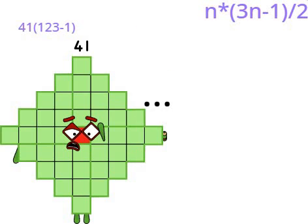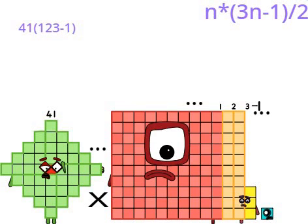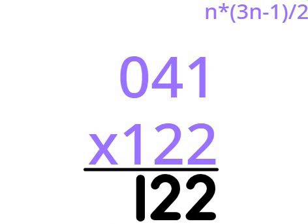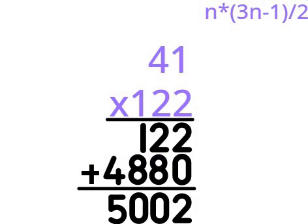Wait — the formula is 41 times (3 times 41 minus 1), which is N times (3N-1). I didn't know this calculation. 41 times 122 is... that's not right. The answer is 5002.